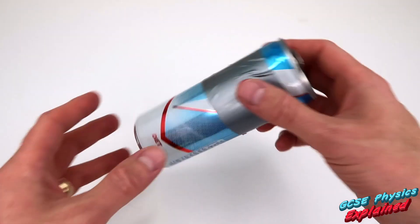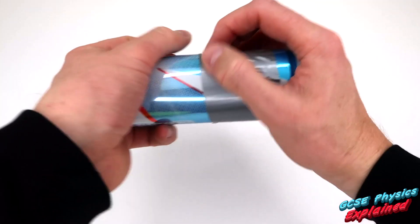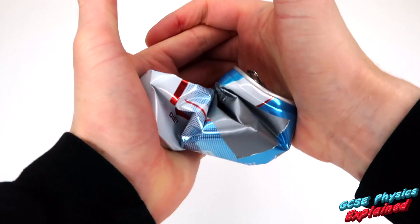For example, a metal drinks can undergoes inelastic distortion when it is crushed.